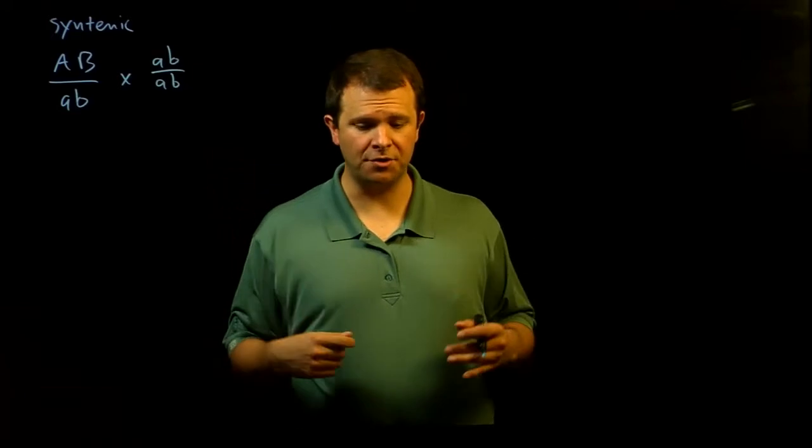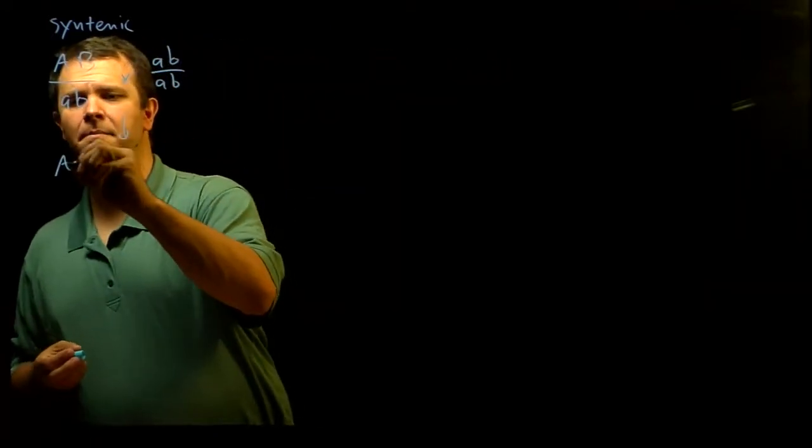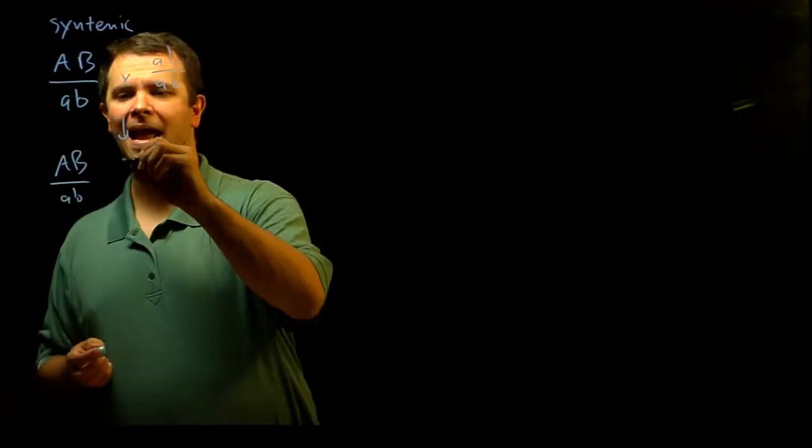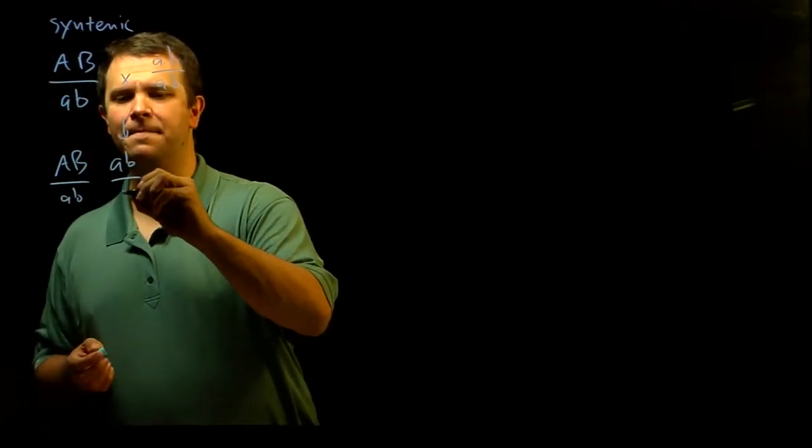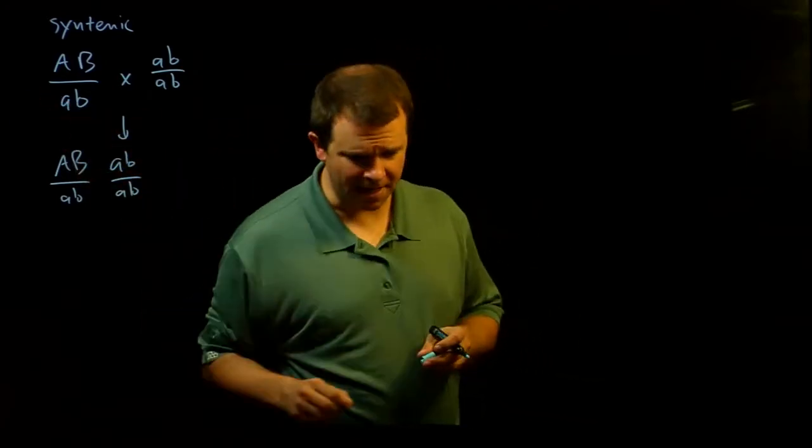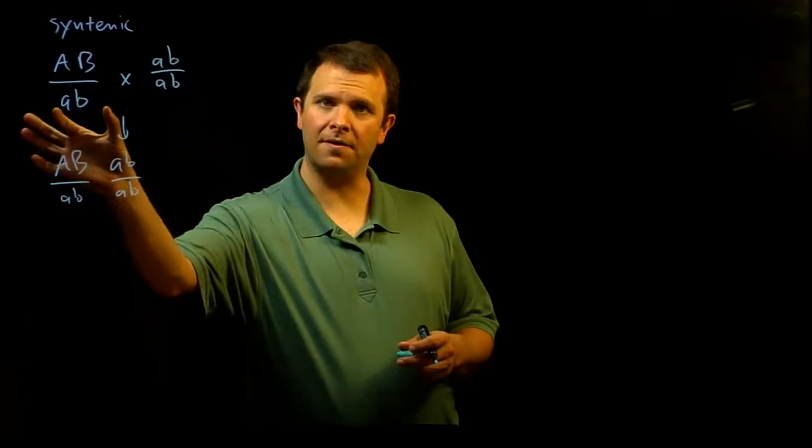When we do this cross, what do we see? Well, we usually see big A, big B individuals and little a, little b individuals. That makes sense because this heterozygote passed on this chromosome or it passed on this chromosome.